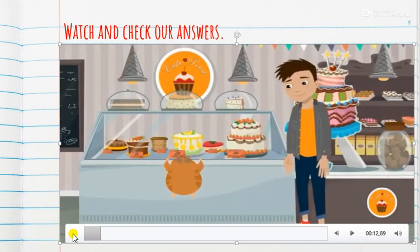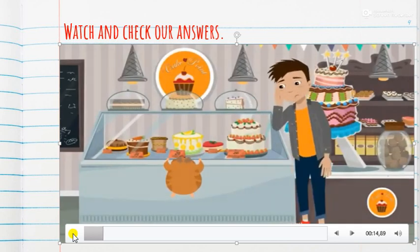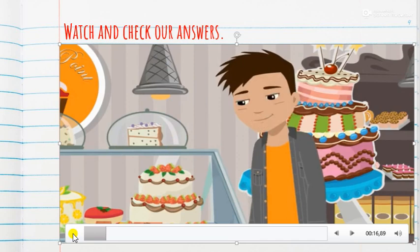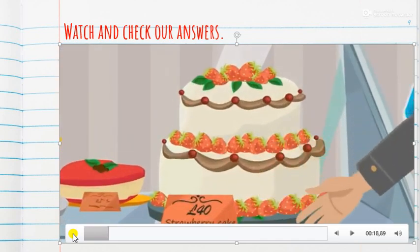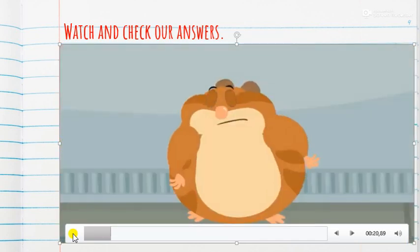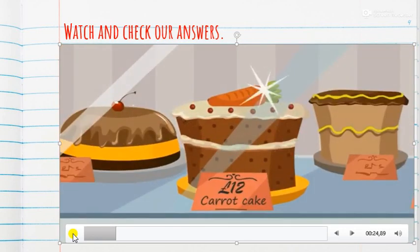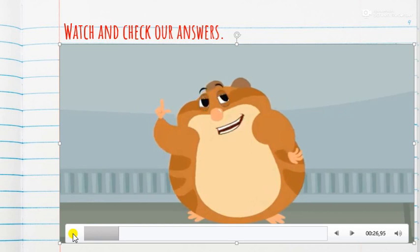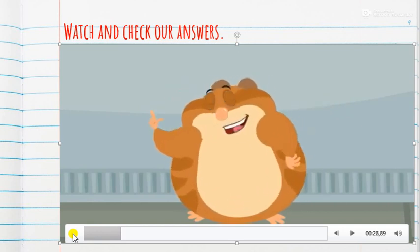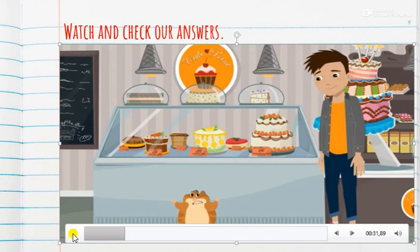"The Biggest Cake." Max and Hammy are buying a cake for the family. "Hammy, how about the strawberry cake?" "The carrot cake is better."